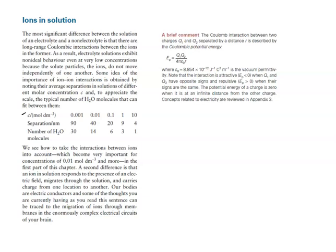The Coulombic interactions between two charges Q1 and Q2, separated by distance R, is described by the Coulombic potential energy, where ε equals 8.854 × 10⁻¹² per joule, coulomb squared per meter. The magnitude of the two charges matters, and the potential energy associated with that attraction varies based on the inverse of the radius.